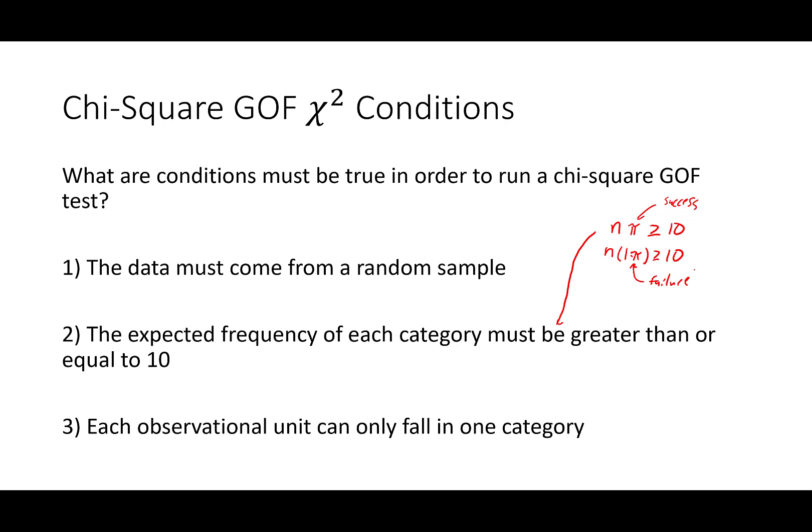Now we're dealing with multiple categories. Essentially, what we'll have is n times the hypothesized value for each needs to be 10. Our second one needs to be 10, our second hypothesized proportion, and that needs to be true for all of our groups up until our last group. All of our expected frequencies need to be at least 10. Again, this is essentially for our central limit theorem, but now we're doing this for multiple groups.